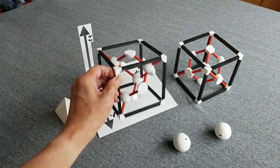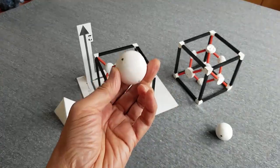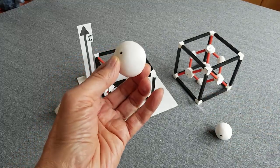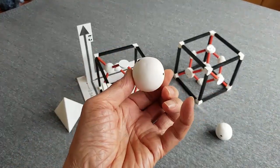A space-filling model at the same scale uses larger spheres for the atoms like this. Each atom by itself has four electrons in its outer shell.